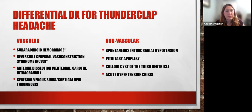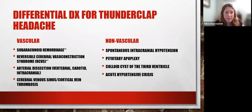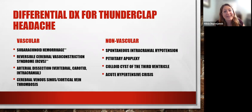Subarachnoid hemorrhage and RCVS are statistically the two most common causes of thunderclap headache. Other etiologies include arterial dissection — vertebral, carotid, or intracranial — cerebral venous sinus or cortical vein thrombosis, which is where MRV is important. Non-vascular causes include spontaneous intracranial hypotension, pituitary apoplexy or ischemia, colloid cyst of the third ventricle, or acute hypertensive crisis.